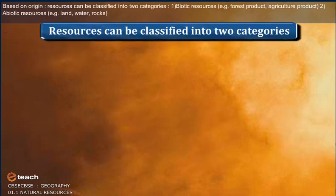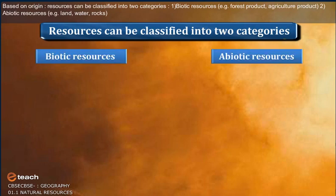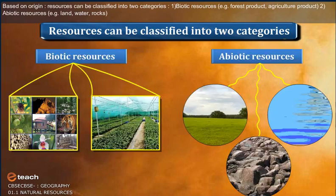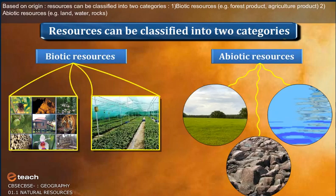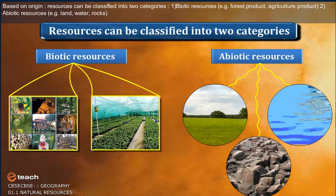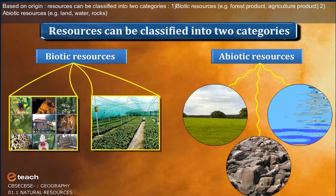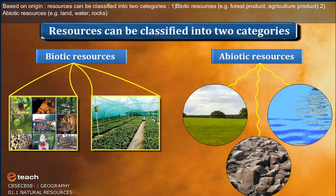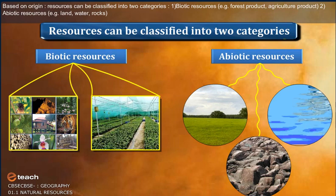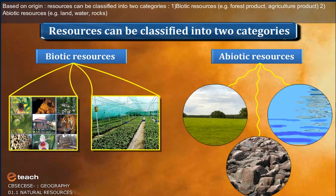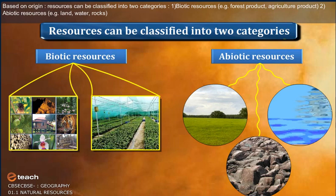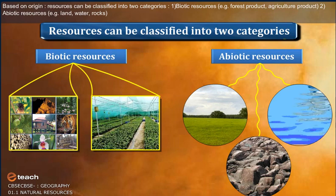Based on Origin, resources can be classified into two categories. Biotic Resources, for example, forest products and agriculture products. Abiotic Resources, for example, land, water, and rocks.